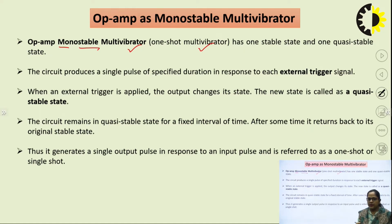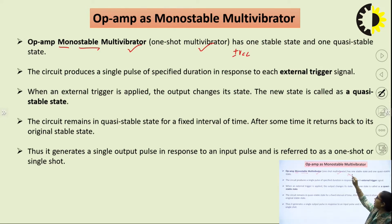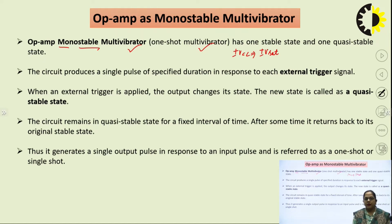What do we mean by stable states? Because it is a non-linear application of op-amp, the output of the multivibrator can be either +Vsat or −Vsat — the saturated output. The saturated output means the maximum value of output from the op-amp, which equals ±Vcc. So the multivibrator can be either in +V saturation or −V saturation.